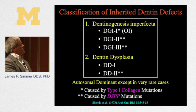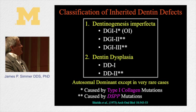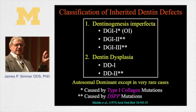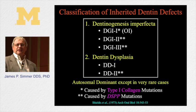All of these conditions are autosomal dominant, except in very rare cases where other genes are involved — most of those genes are involved in the post-translational modifications of type 1 collagen.